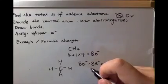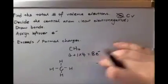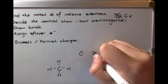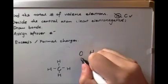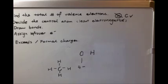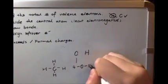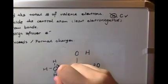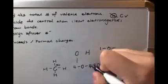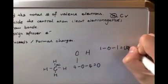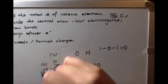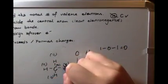Carbon fulfills the octet rule because it has eight electrons total, and hydrogen only needs two, so it's good. Now we calculate the formal charge. For carbon: four minus zero minus four equals zero. For hydrogen: one minus zero minus one equals zero. They are all zeros, so we're good to go.